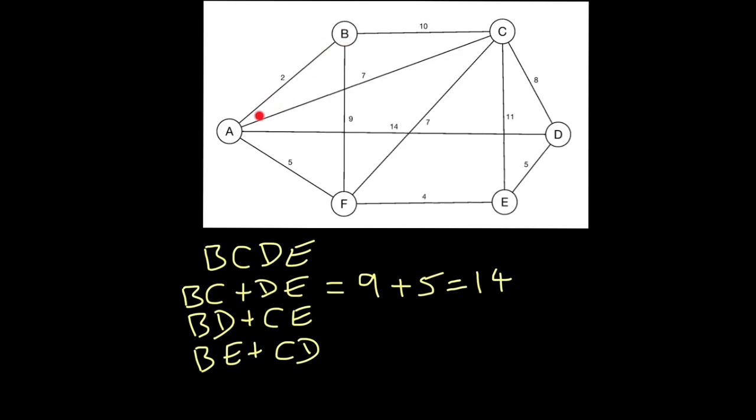or to go 2 and 14 makes 16. Doesn't matter which way we choose, the lowest is 16. And to go from C to E, we could either go 11 or 7 plus 4 is 11. Either way, 11 is our smallest, with 27 total.